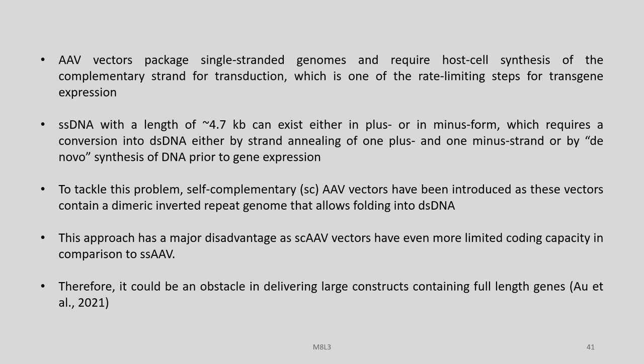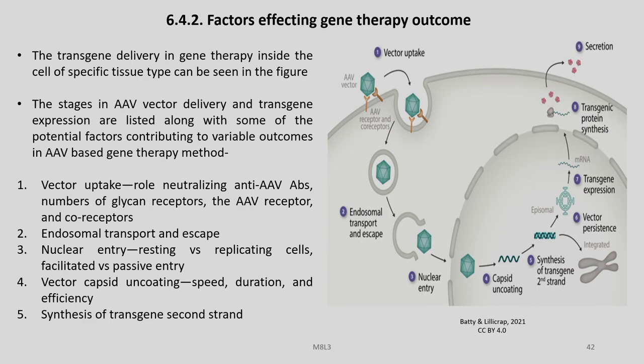To tackle this problem, self-complementary scAAV vectors have been introduced, as these vectors contain a dimeric inverted repeat genome that allows folding into double-stranded DNA. This approach has a major disadvantage as scAAV vectors have even more limited coding capacity, which could be an obstacle in delivering large constructs containing full-length genes.